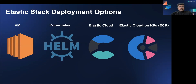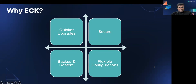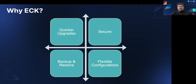There are multiple ways to deploy Elasticsearch: using VMs, using Helm and Kubernetes, Elastic Cloud which is a SaaS offering from Elastic, and ECK — Elastic Cloud on Kubernetes. We chose ECK because it helps us do much quicker upgrades. We are already on 8.6.1, which is the latest and greatest version of Elastic. It is highly secure, has a lot of flexible configurations, and a lot of backup and restore options available using ECK.